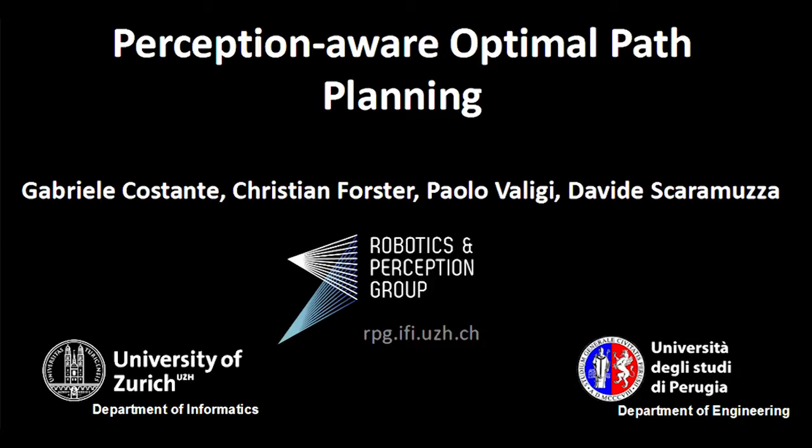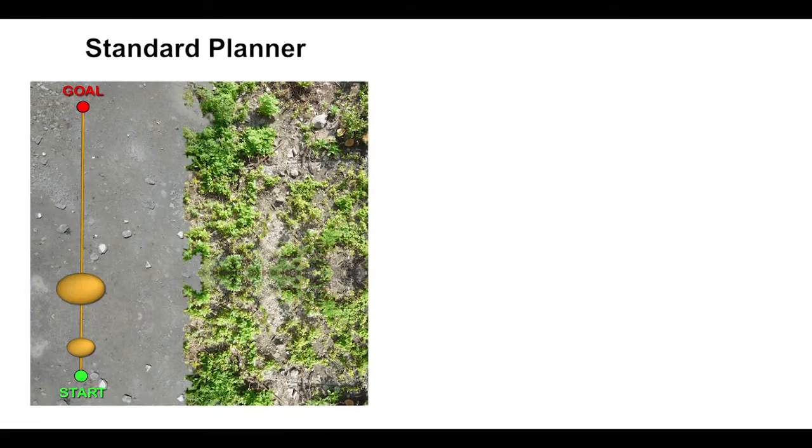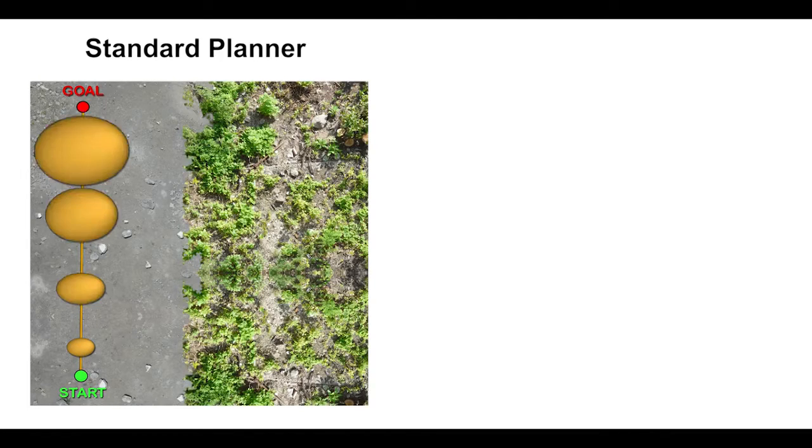In this work, we propose an optimal path planning framework that maximizes the visual information gain along the selected path. Most state-of-the-art planners seek to minimize the trajectory length by only considering the geometric structure of the scene, discarding any information about the scene texture.